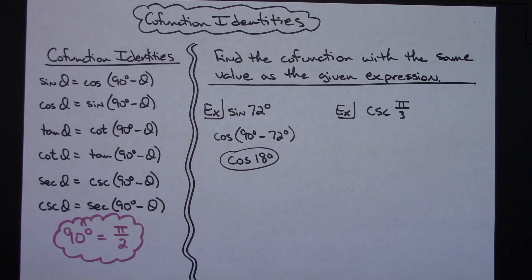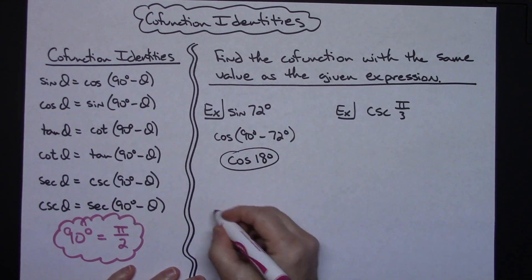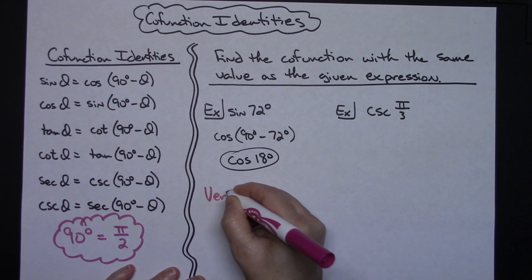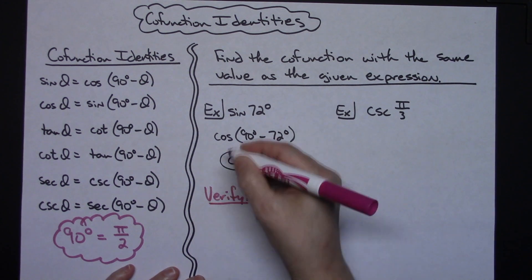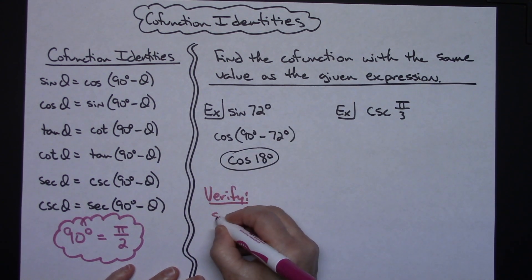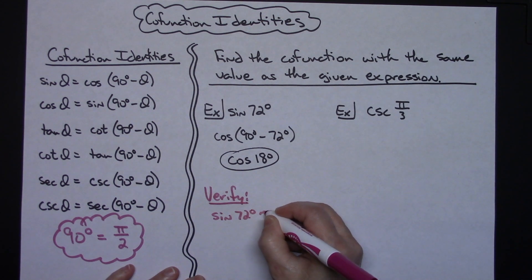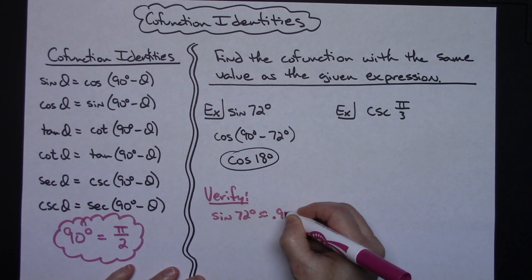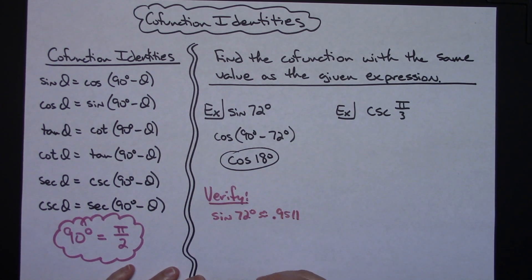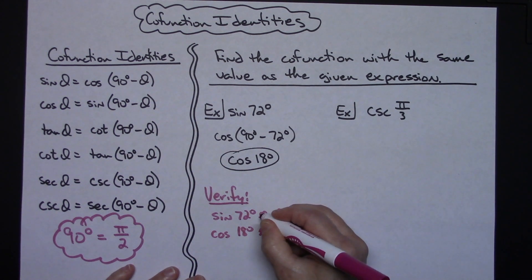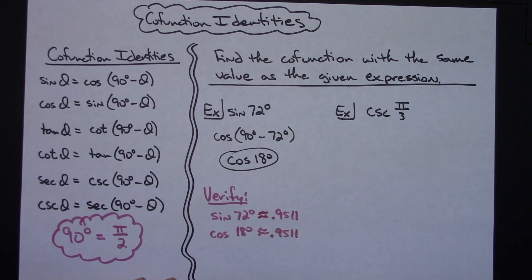Now if you want to prove that it does, then verify it by using your calculator. Make sure you're in degree mode. If you did a verify you would plug both of those values into the calculator. For the sine of 72 degrees you would get 0.9511, and then if you would punch in cosine of 18 degrees you would get 0.9511. So making sure that calculator's in degree mode, and then that verifies it, they do have the exact same value.